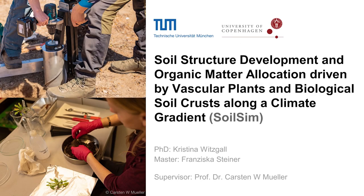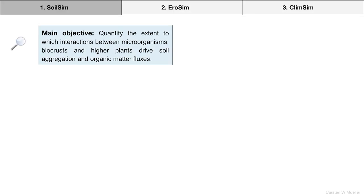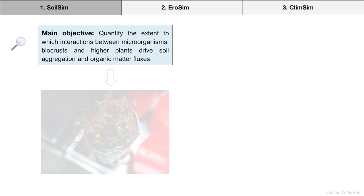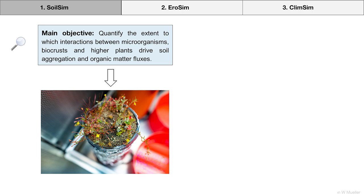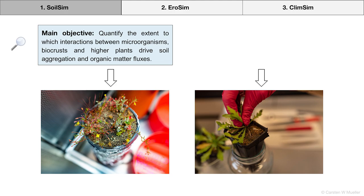I will now tell you a bit about two experiments within my PhD project, part of the SoilSim project, with the name 'Soil Structure Development and Organic Matter Allocation to vascular plants and biological soil crusts along a climate gradient.' Together with my research team at the Technical University in Munich, I would like to find out how interactions between microorganisms, biocrusts, and vascular plants drive the formation of soil aggregates, and how they influence the distribution and stabilization of soil organic matter. We have approached this topic with two experiments: in the first, we incubated intact soil cores or soil monoliths with soils at different stages of development, and in the second, we look into root effects of living and dead plants and roots in top and subsoils.